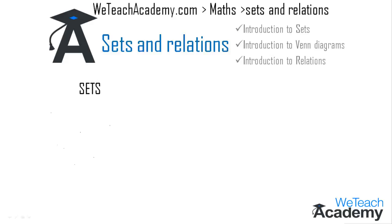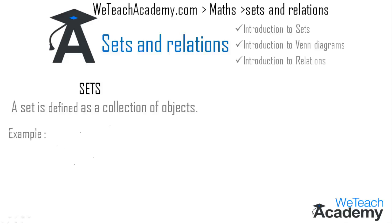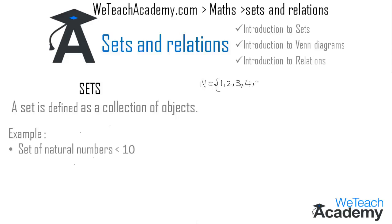First, let us discuss what is a set. A set is a well-defined collection of objects. For example, consider the set of natural numbers less than 10. The natural numbers, denoted by N, which are less than 10 are 1, 2, 3, 4, 5, 6, 7, 8, 9 — written in a row, separated by commas, and enclosed in braces.